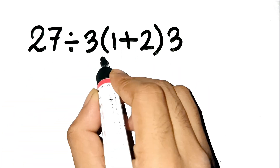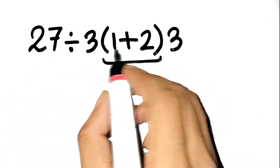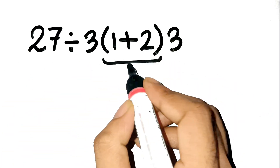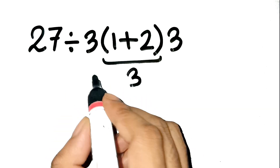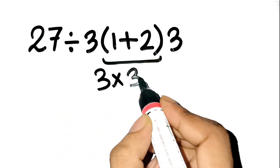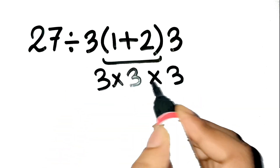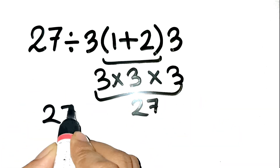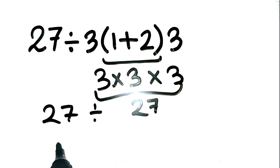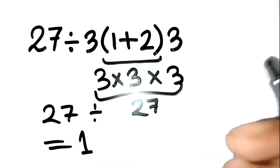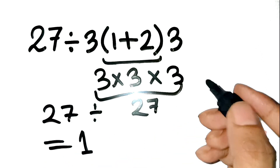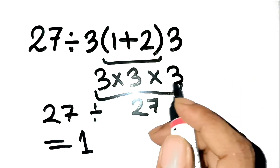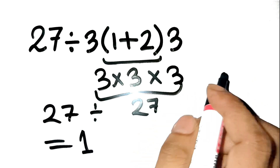Most people see the parentheses and go: okay, 1 plus 2 is 3, then 3 times 3 times 3 is 27, so 27 divided by 27 equals 1. Easy. Done. But not quite — that's exactly where the trap is.